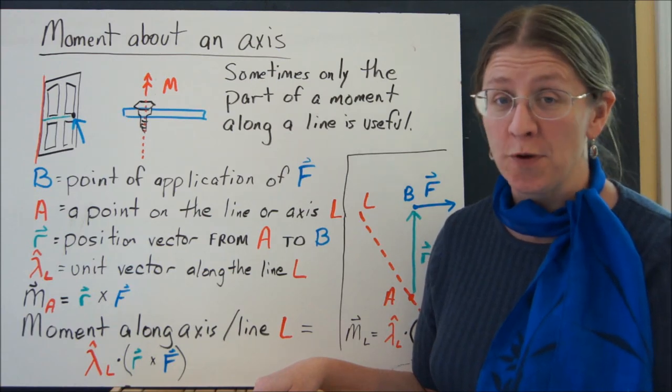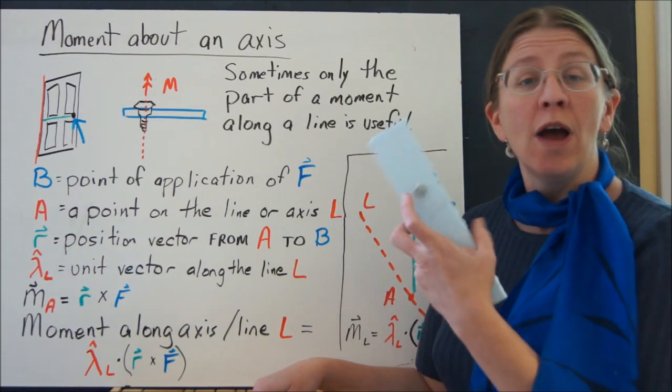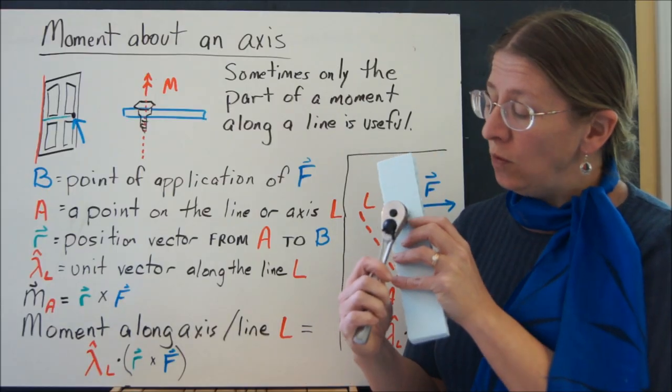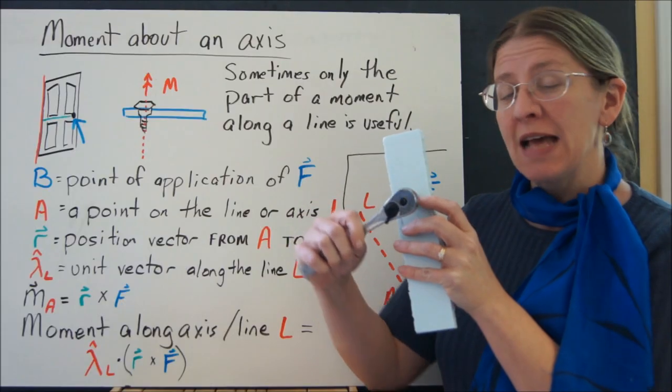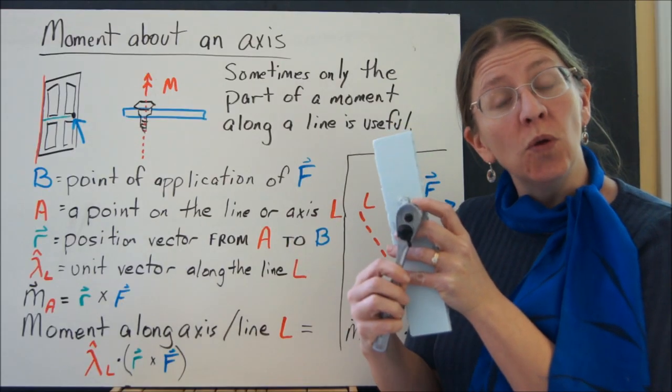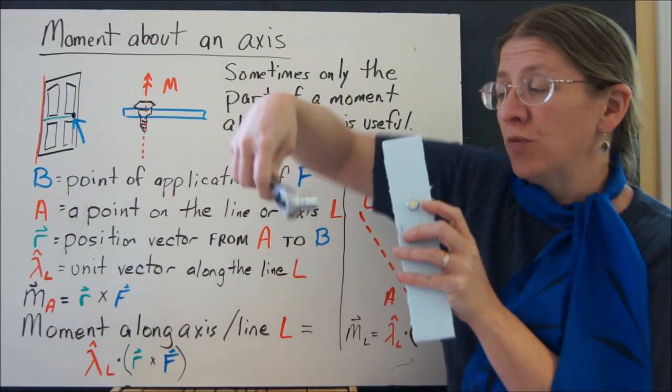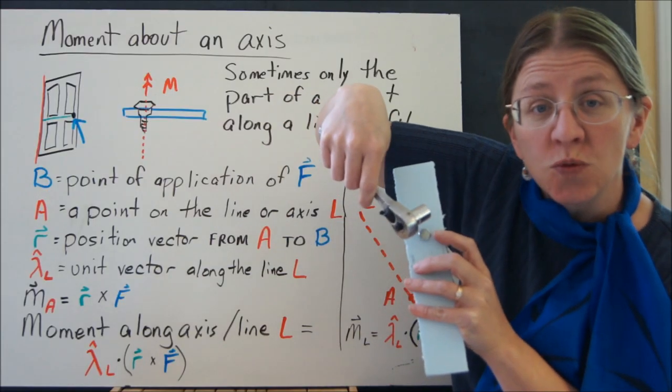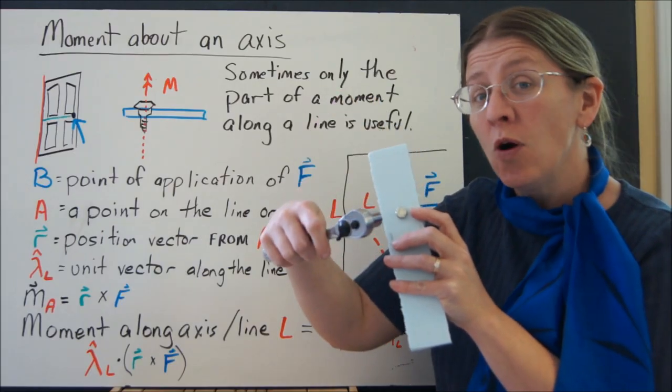Let's talk about moment about an axis. Sometimes when you have a bolt, it's really only the work that you're doing along the axis of the bolt that helps you. If you hold your wrench sort of crooked and you're pushing this way, it doesn't help you much. What you need to do is actually turn the bolt along the axis of the bolt.